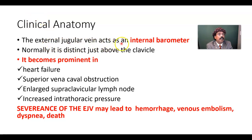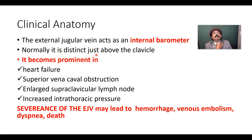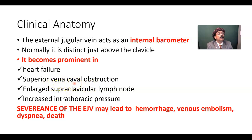The external jugular vein acts as an internal barometer, according to Keith Moore. Normally it is distinct just above the clavicle, but it becomes very prominent in heart failure, superior vena cava obstruction, and cardiac tamponade — when there is excessive collection of fluid inside the pericardial cavity — and with large supraclavicular lymph nodes, perhaps due to cancer spread.